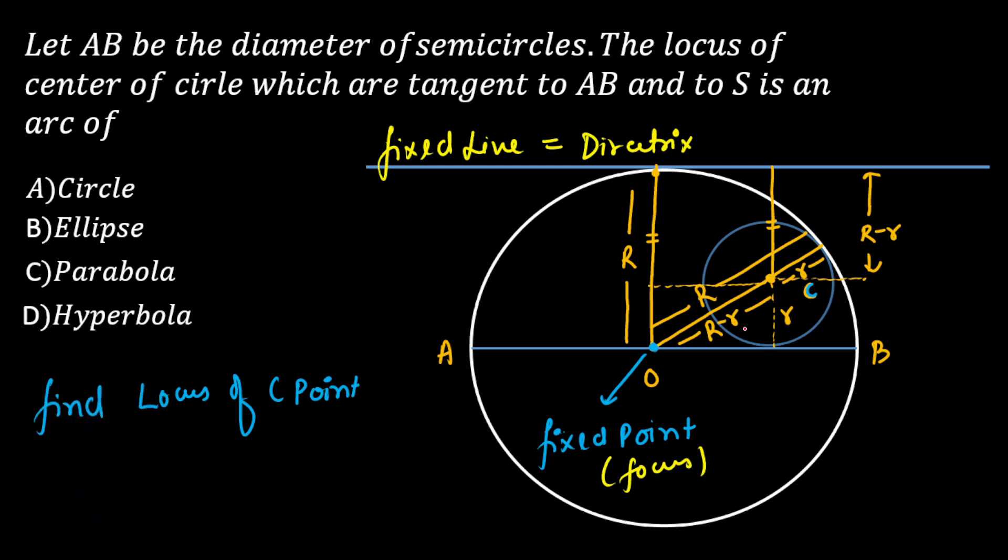The distance of the moving point from the fixed point is R minus r. And the distance of the same moving point from the fixed line is also R minus r. These two distances are exactly the same. So the eccentricity will be equal to one. Through our basic definition, the locus of this point will be a parabola.